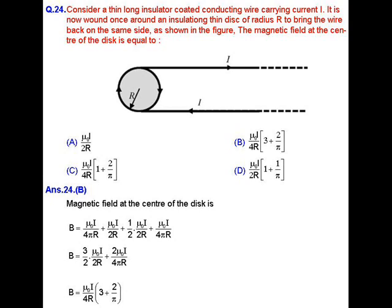Now we know that magnetic field at the center of the disk will be equal to B equals mu naught I upon 4 pi R plus mu naught I upon 2 R plus half mu naught I upon 2 R plus mu naught I upon 4 pi R. That is the magnetic fields because of the two straight wires, the conducting disk, and the half wire on the same side present in between the two parallel wires.